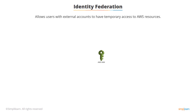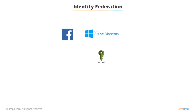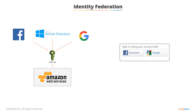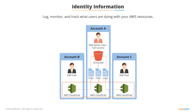IAM allows you to set up identity federation, so you can allow users who already have passwords elsewhere, for example Facebook, Microsoft Active Directory, or Google, to get temporary access to your AWS account. IAM also allows you to log, monitor, and track what users are doing with your AWS resources through the use of CloudTrail. It logs everything – user login times, IP addresses – and writes it to a log stored in an S3 bucket where you can keep all log files for as long as you want.